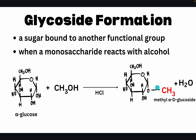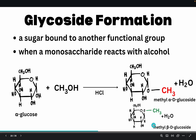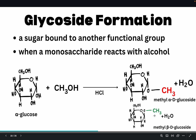The methyl group could go downward or upward. If the methyl group is upward, the product becomes methyl beta-D-glucoside.